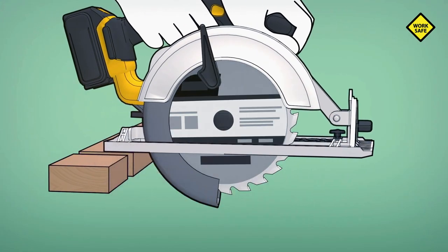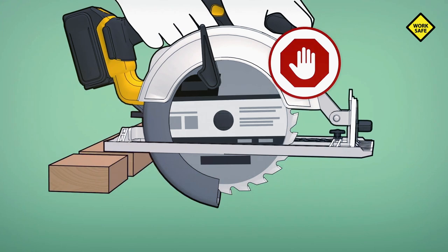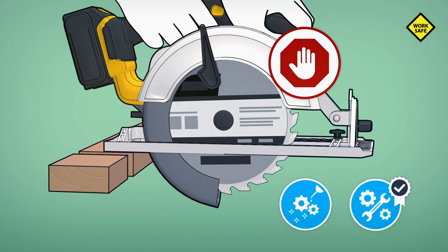Put the saw aside and stop using it if the guard isn't working properly, even just a little. And if regular maintenance doesn't fix the problem, have your saw serviced by a qualified repair person that is recognized by the manufacturer.